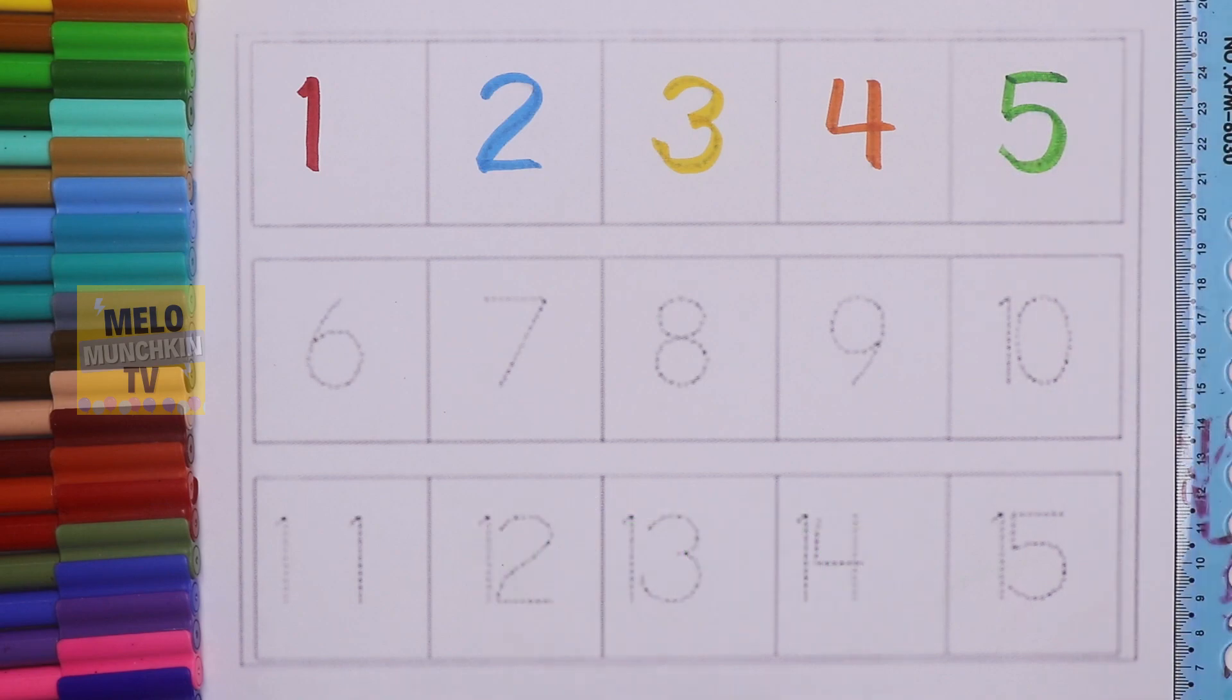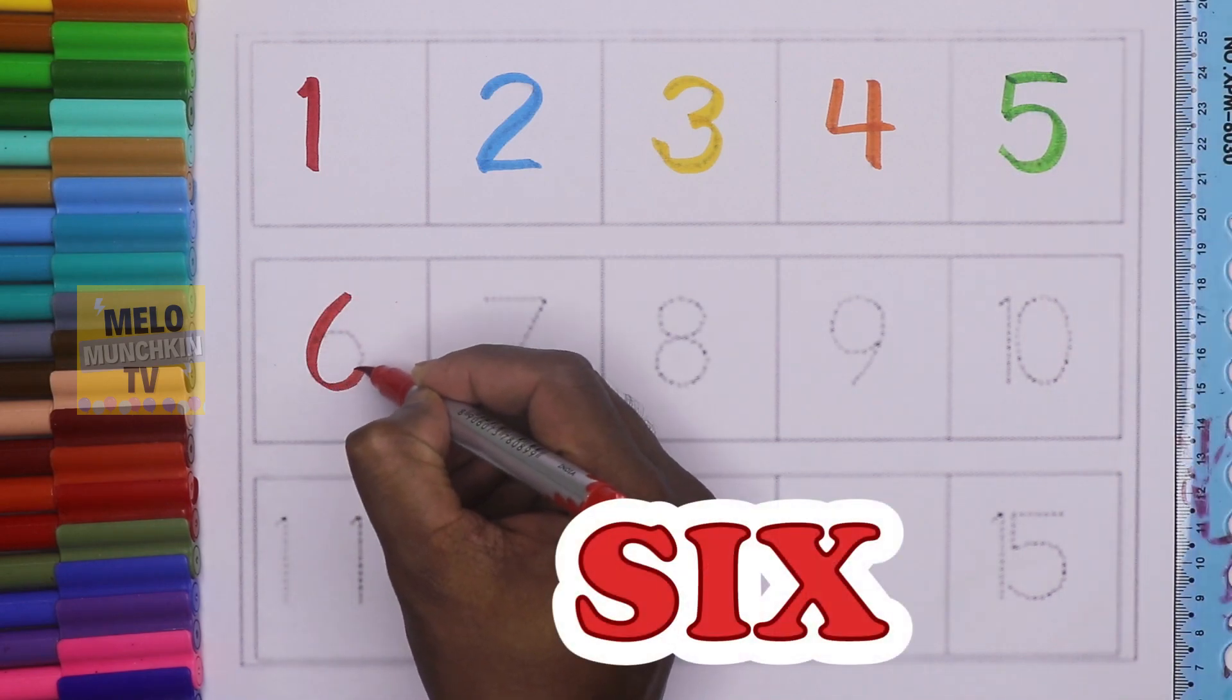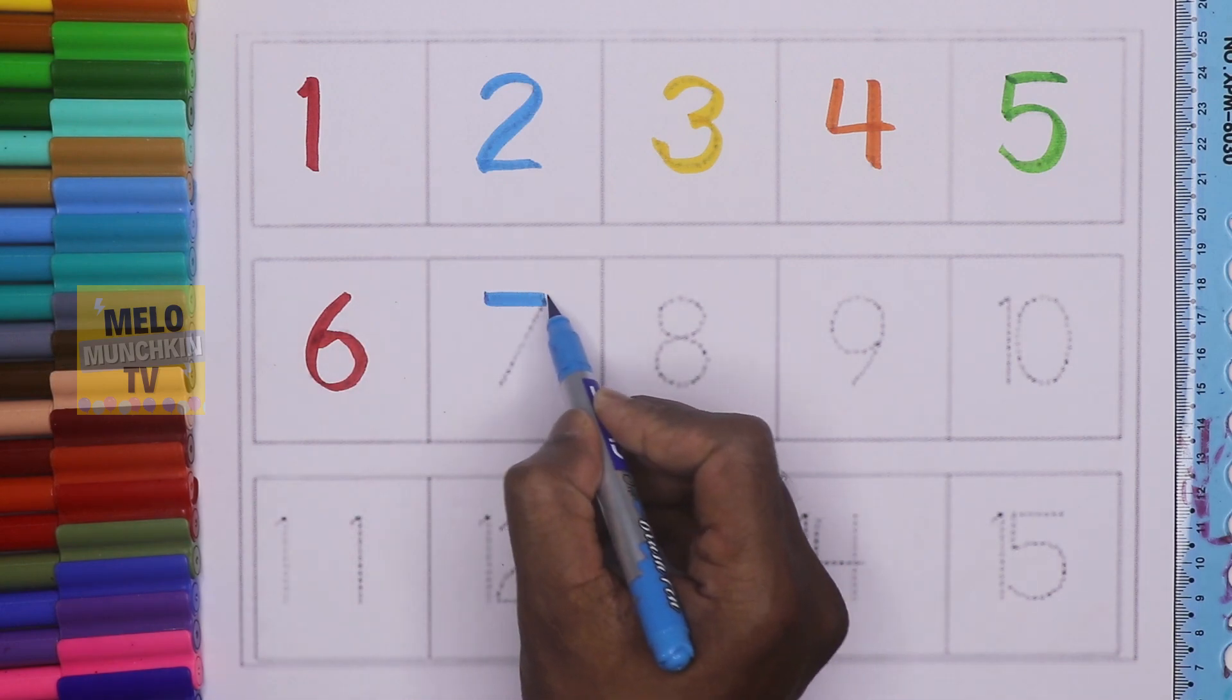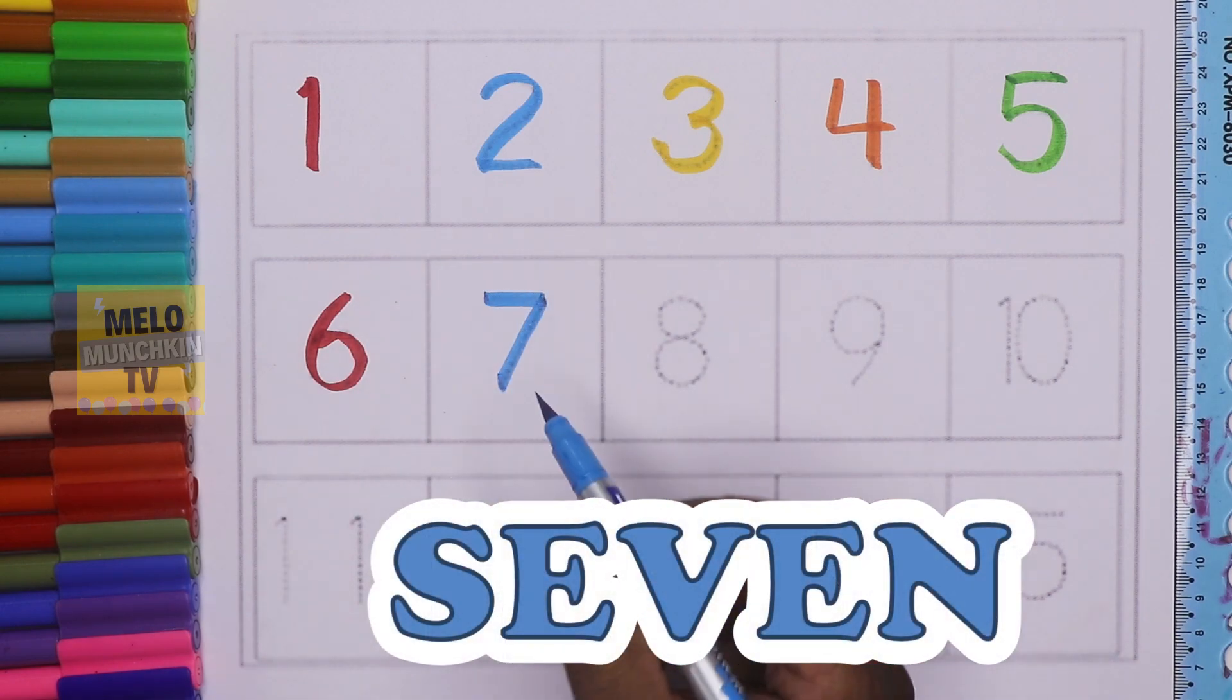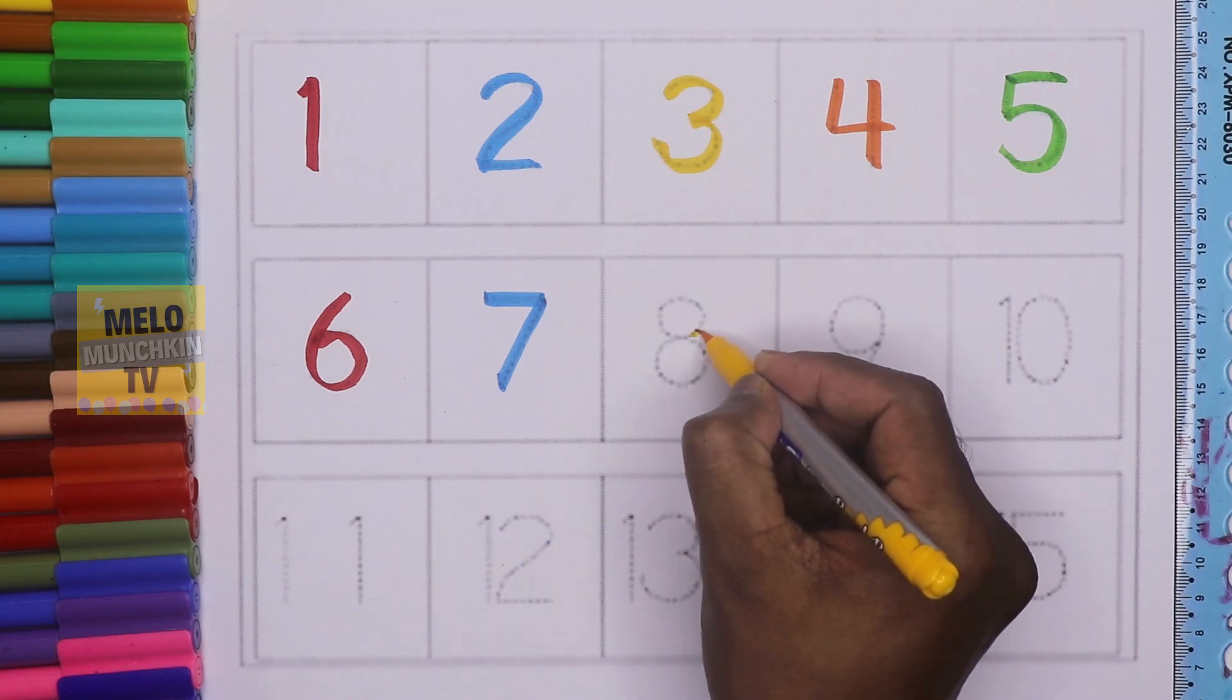This is number six: S-I-X, 6. Number seven: S-E-V-E-N, 7. Eight: E-I-